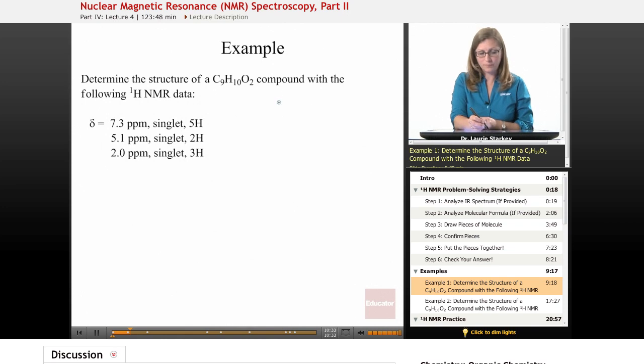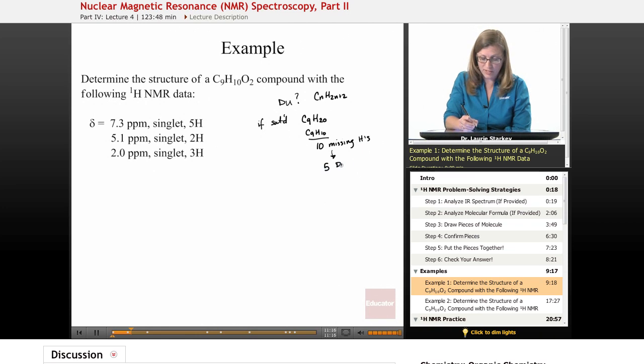We need to calculate the DU. If it was saturated, what would the formula be? We have 9 carbons. It would be C9H to the, remember CnH2n+2. So it's 9 times 2 is 18, plus 2 is 20. If it was saturated, it would be C9H20. What do we have? We have C9H10. So we have 10 missing hydrogens, and every two missing hydrogens is a degree of unsaturation, so we have 5 DU. Our formula when we're done has to account for all five of those.